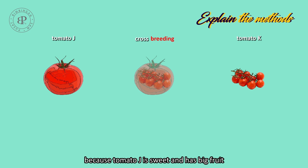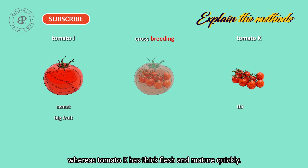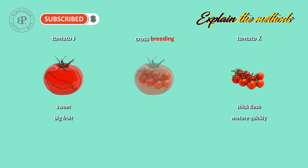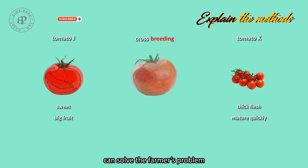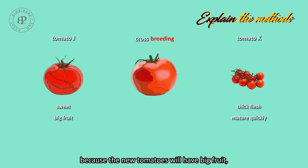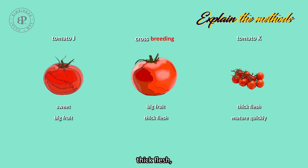Because tomato J is sweet and has big fruit, whereas tomato K has thick flesh and matures quickly. The cross-breeding of tomato J and tomato K can solve the farmer's problem because the new tomatoes will have big fruit, thick flesh, sweet and mature quickly.